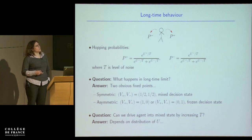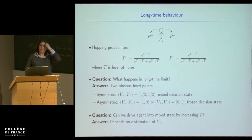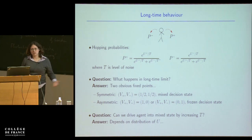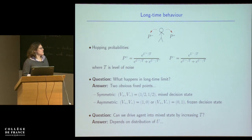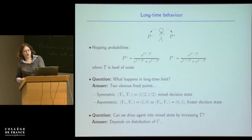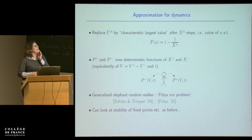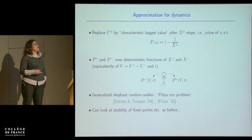The question is: can we drive the agent into the mixed state by increasing the level of noise? Apparently this is what economists want to believe — that if you add more disruption or churn into people's lives they switch between decisions more. The answer, which is sort of obvious, is that it depends on the distribution of the U's, on the distribution of these experiences.